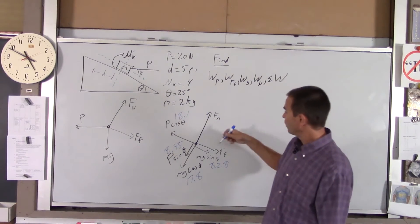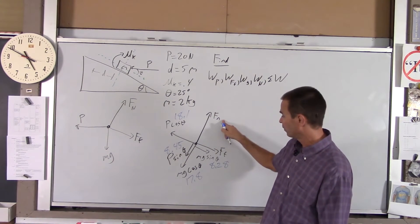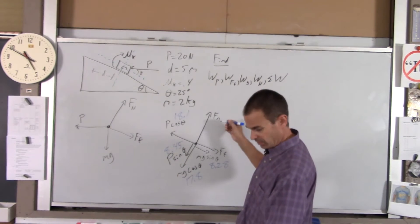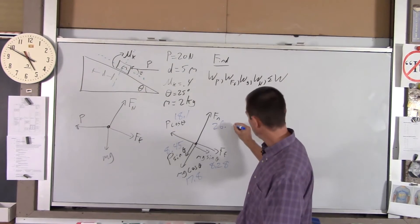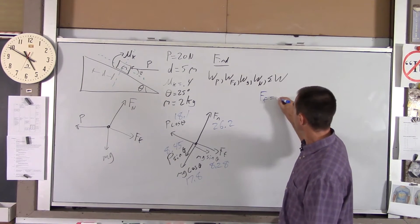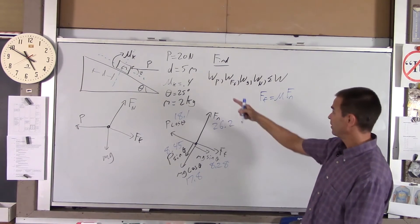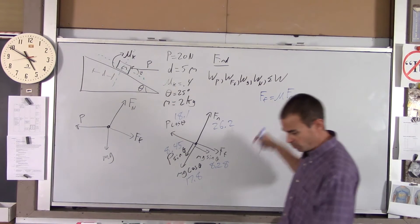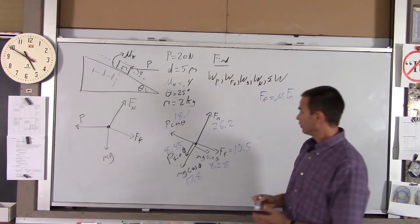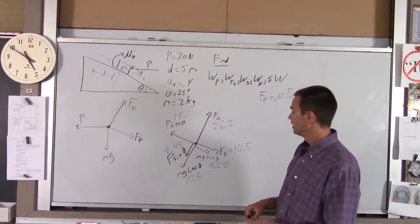The normal force: we know the block is not accelerating away from the incline or crashing through the incline, so we know that the normal force has to equal the sum of these two. If you just add these two together you get 26.2 newtons. Finally, friction. Force of friction is mu times fn. We got fn and we got mu, so you just take 0.4 times 26.2 and you get about 10.5. So now we've got every force acting on the block and we have the magnitude of every force.